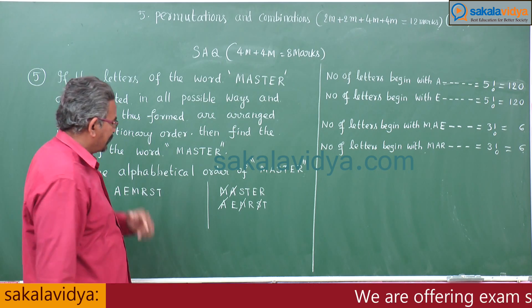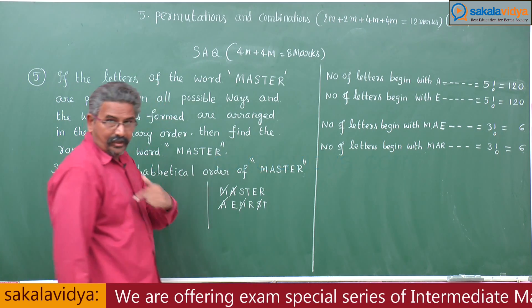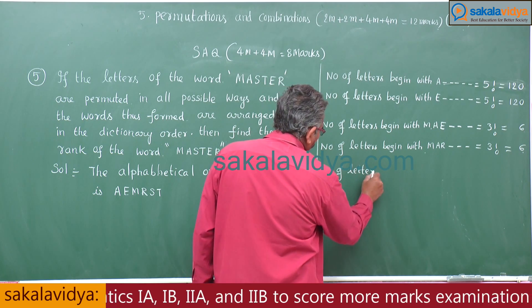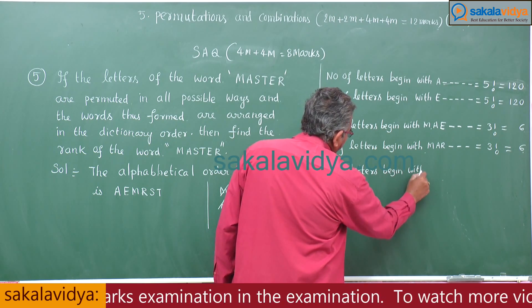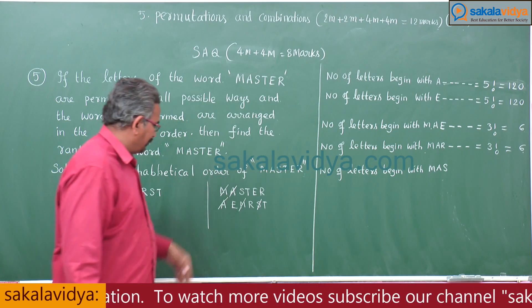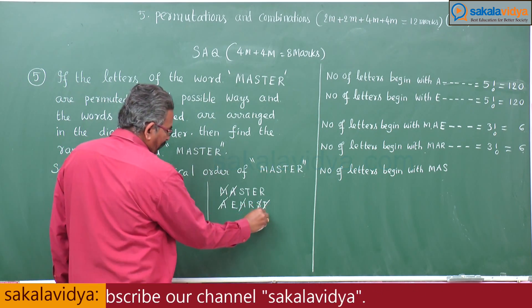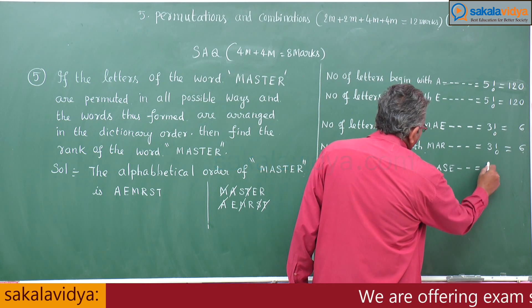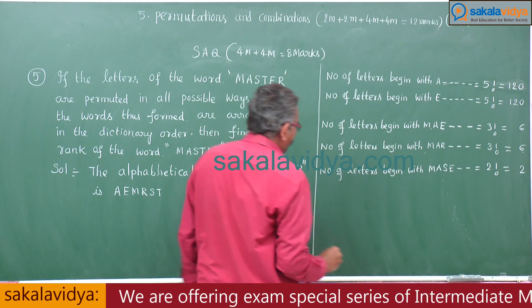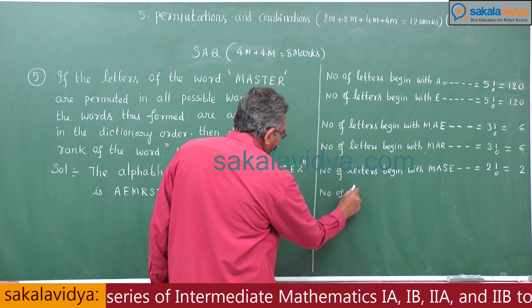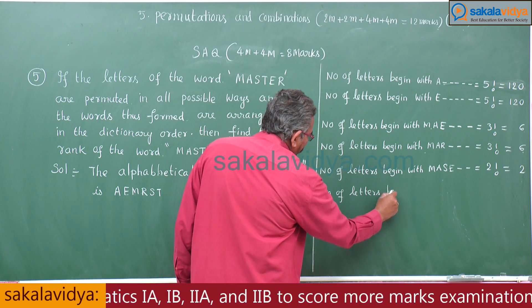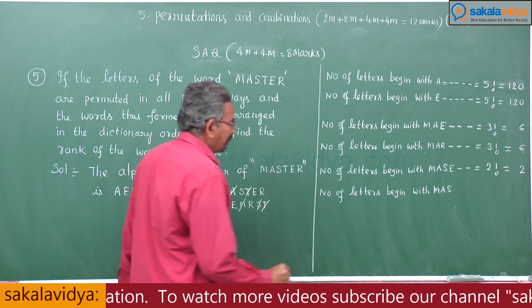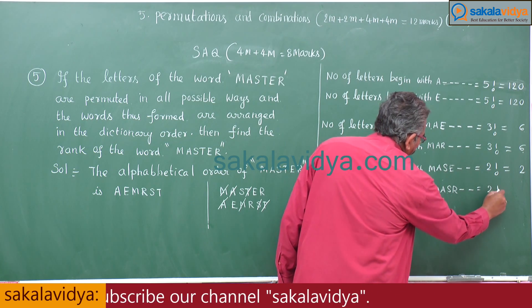Next, words beginning with MAS. After MAS, we need T. Before T, the letters E and R appear. So number of words beginning with MASE is 2 factorial = 2, and number of words beginning with MASR is also 2 factorial = 2.